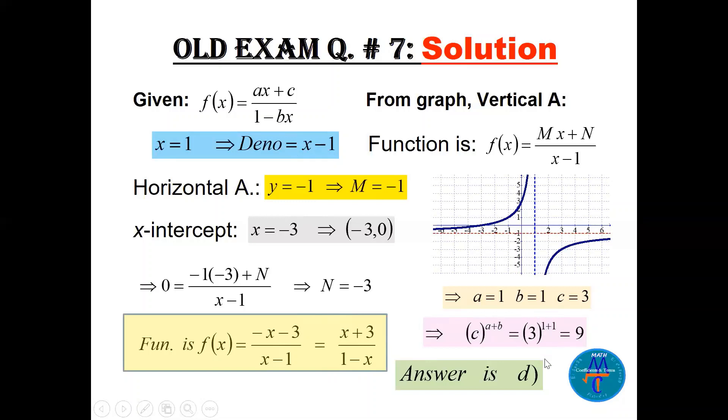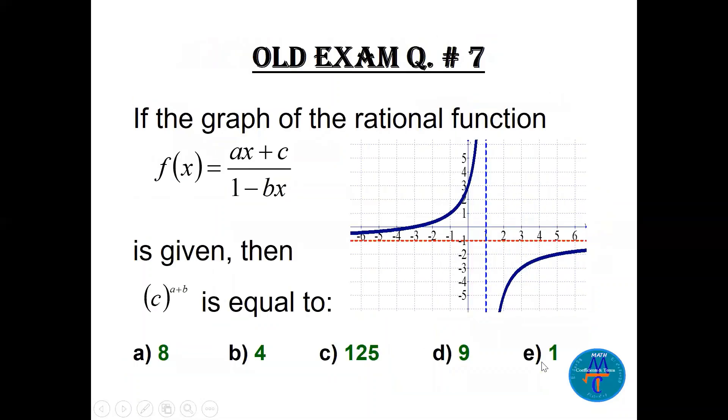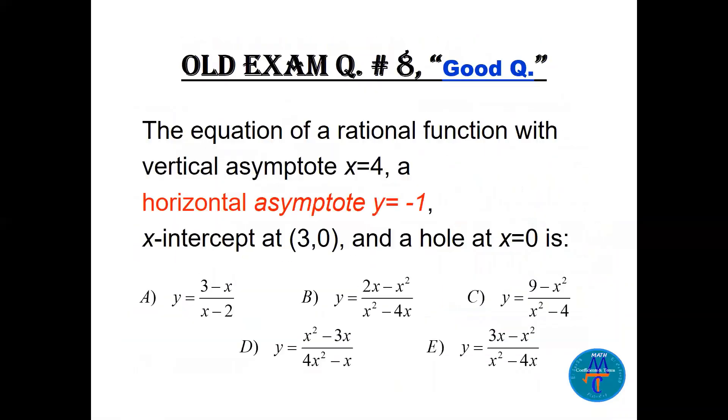So c^(a+b) = 3^(1+1) = 3² = 9. The answer is D.